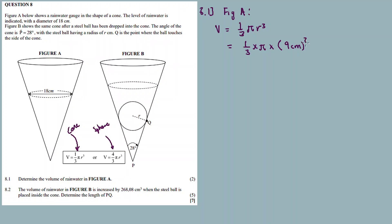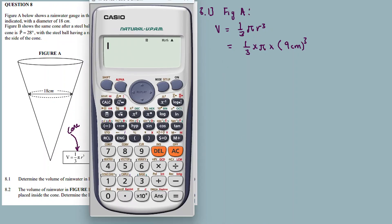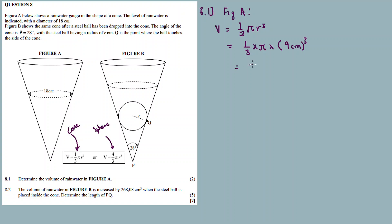So it's one-third times pi times 9 cubed. Using the calculator: one-third times shift pi times 9 cubed gives us 763.41 cubic centimeters — that is, 763.42 cm³.